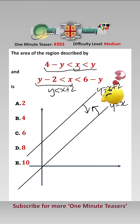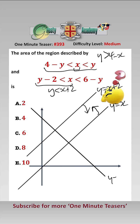Now let's have a look at x greater than 4 minus y, which is the same as y must be greater than 4 minus x. So y equals 4 minus x looks like that — that's y equals 4 minus x — and y must be greater than that.